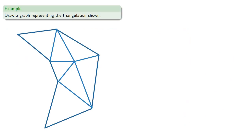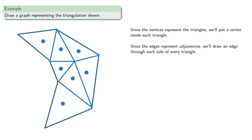So we might try to draw a graph representing this triangulation. Since the vertices represent the triangles, we'll put a vertex inside each triangle. And since the edges represent adjacencies, we'll draw an edge through each side of every triangle.